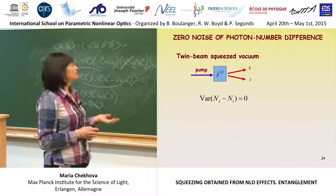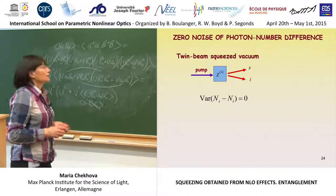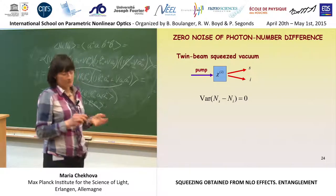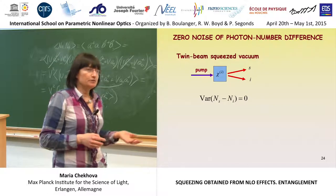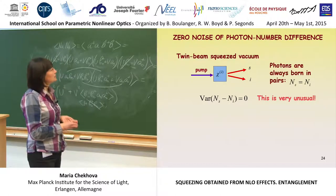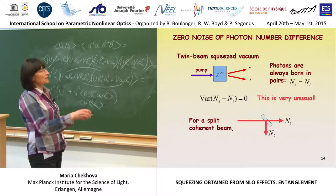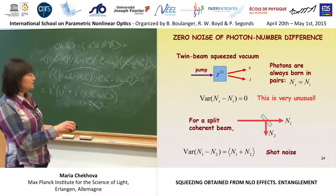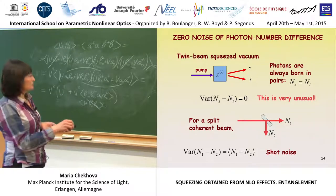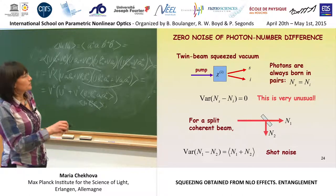The surprise is that this is difficult to achieve classically. If you split a coherent beam on a 50-50 beam splitter, the mean photon numbers after the splitter can be made equal, but the variance of their difference will always equal the mean sum — this is shot noise. Shot noise comes from the Poissonian distribution of photons: for discrete independent events, variance equals the mean. This is actually proof that light consists of photons.